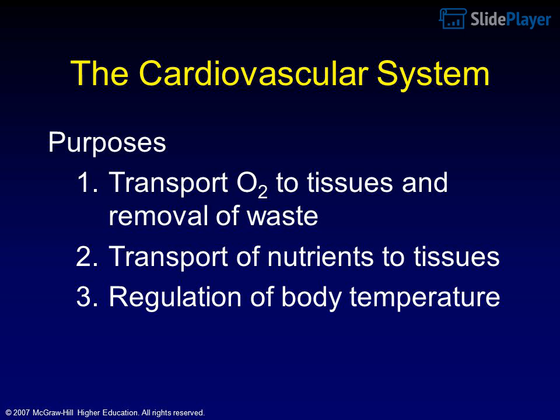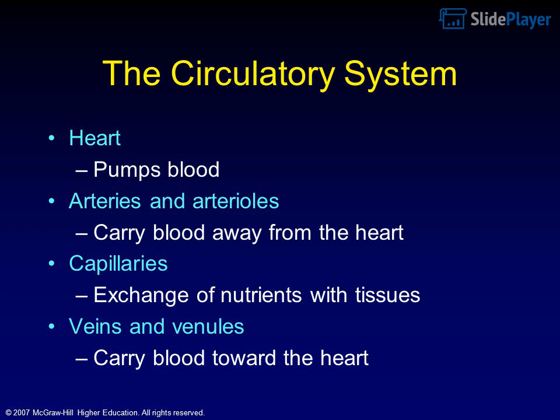The cardiovascular system serves several purposes: transport O2 to tissues and removal of waste, transport of nutrients to tissues, and regulation of body temperature. The circulatory system consists of the heart, which pumps blood; arteries and arterioles, which carry blood away from the heart; capillaries, which allow exchange of nutrients with tissues; and veins and venules, which carry blood toward the heart. Structure of the heart is shown in Figure 9.1.